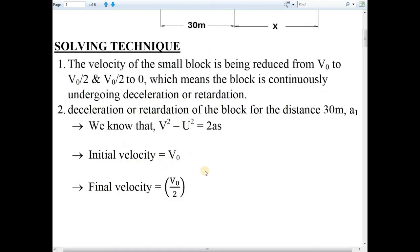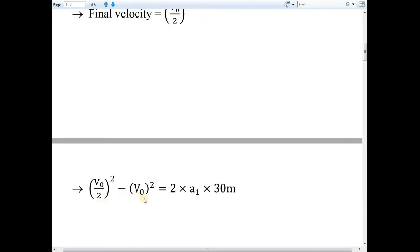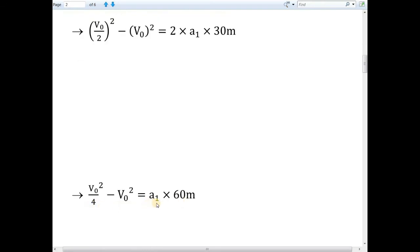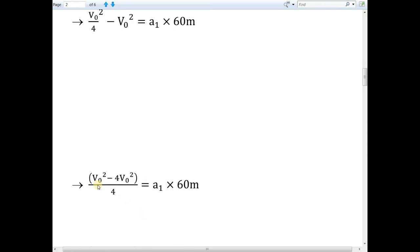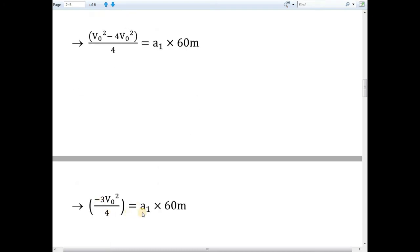Now we will substitute the values in this formula. We get: (V0/2)² − V0² = 2 × A1 × 30. Here (V0/2)² is V0²/4, and V0² remains V0², and 2 × 30 = 60. So the next step is: V0²/4 − V0² = A1 × 60. Taking LCM of 4 on the LHS, we get: (V0² − 4V0²)/4 = A1 × 60. In the numerator, V0² − 4V0² = −3V0², so: −3V0²/4 = A1 × 60.